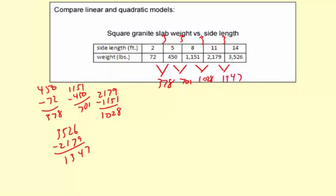So as you're adding three to the inputs, the pattern for the outputs, well you're not adding the same number each time. Look at the differences. First you add 378, then 701, then 1028, and then 1347. Obviously not a linear model.